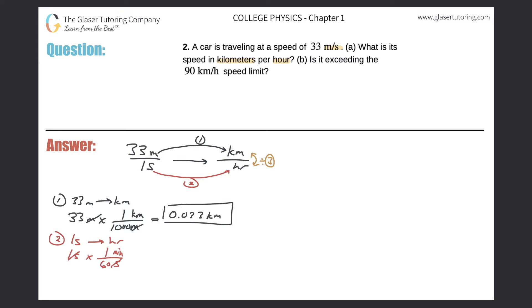So the seconds will cancel. Now I'm going to put minutes in the denominator and try to get to hours. I can put hours in the numerator because I do know a relationship between these two values. One hour is 60 minutes. So the minutes cancel.